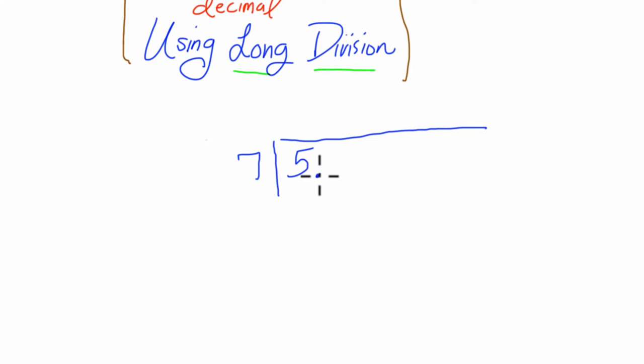Now we can think of 7 going into 50 here, and let's kind of scale this down to make the problem a little bit easier. Just don't forget your zero and decimal point.